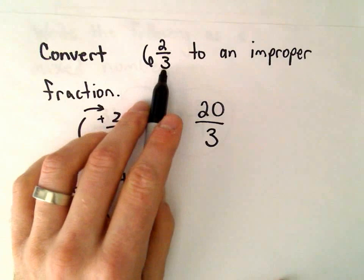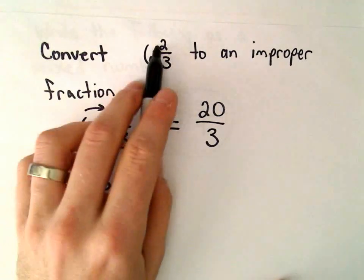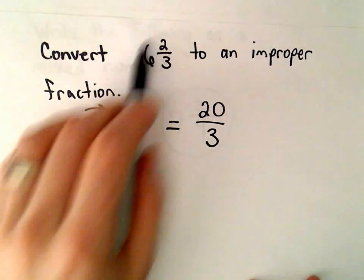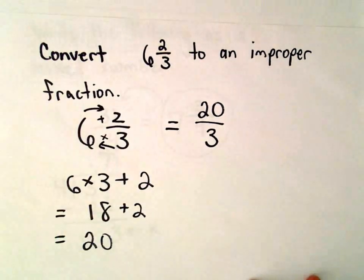So when I look at this I say well, 3 times 6 is 18 plus 2 is 20. I get 20 over 3, and now we have our mixed number written as an improper fraction.